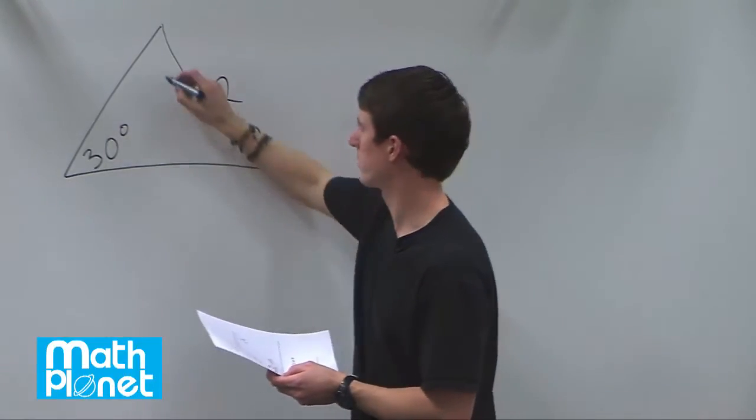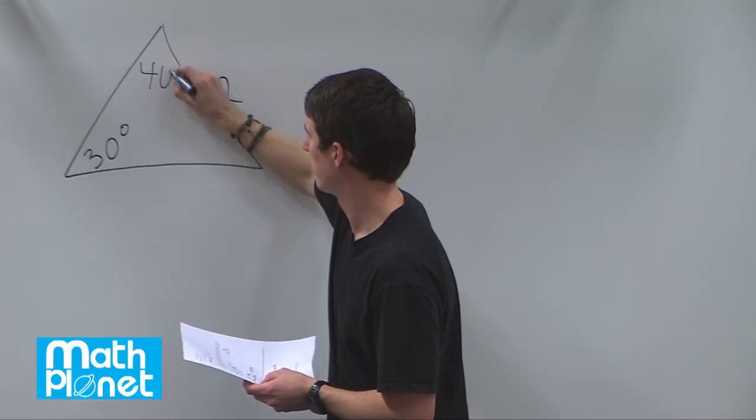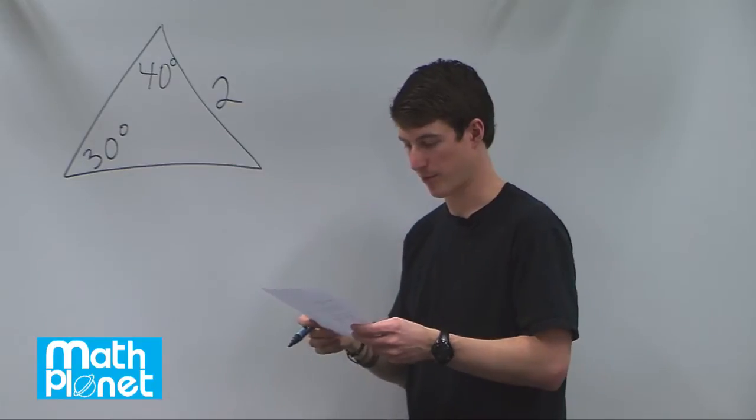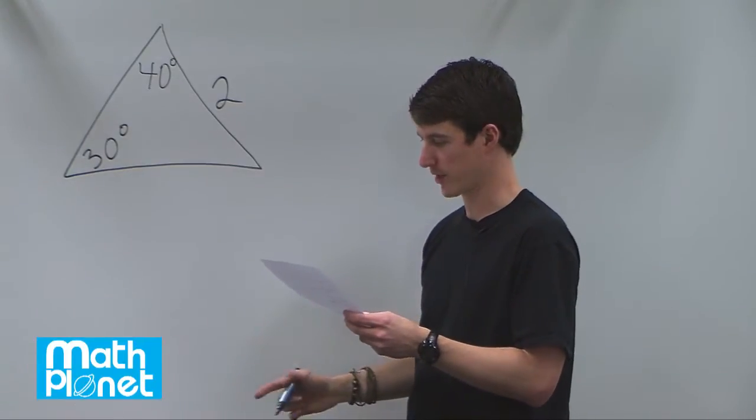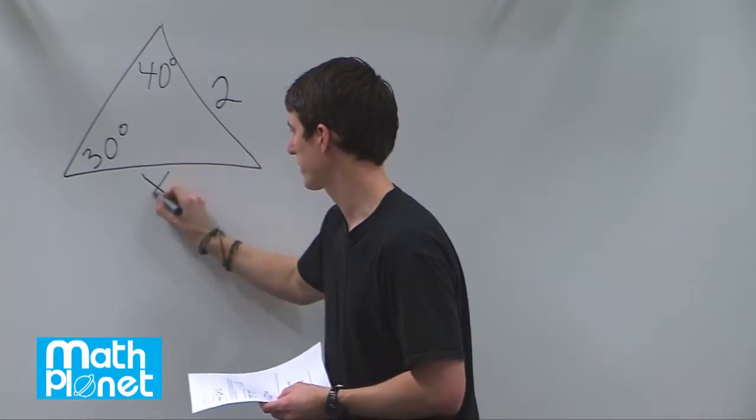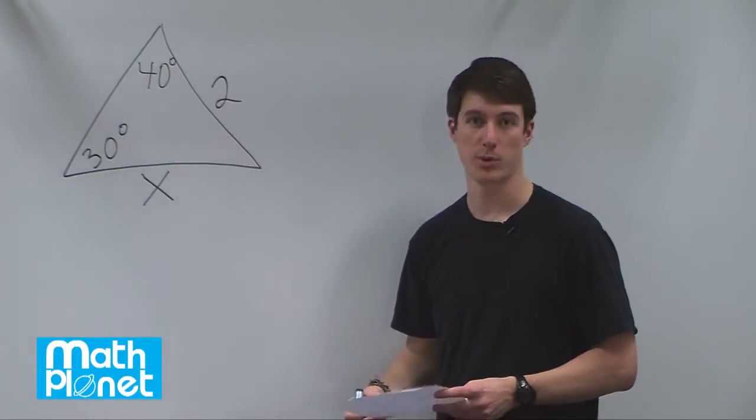We're also given that one of these angles is 40 degrees. So, 40 degrees and 30 degrees. Now, what we need to find is what is the length of the side that's opposite the 40 degrees. That's our unknown. We'll call it x, and then we're just going to solve for that in whatever way we can.